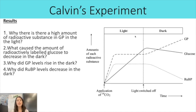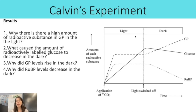A common question is: why is there a high amount of radioactive substance in GP in the light compared to RuBP? The key is how many carbons each compound contains. GP is a three-carbon compound and you have two GP molecules in each Calvin cycle, whereas you only have one RuBP, which is a five-carbon compound. So there will always be a higher amount of radioactivity in GP compared to RuBP because it contains more carbon atoms, and carbon is what's radioactive.